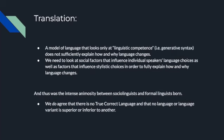In plainer English: a model of language that looks only at linguistic competence — what the neogrammarians and Chomsky propose — does not sufficiently explain how and why language changes. We need to look at social factors that influence individual speakers' language choices, as well as factors that influence stylistic choices, in order to fully explain how and why language changes.